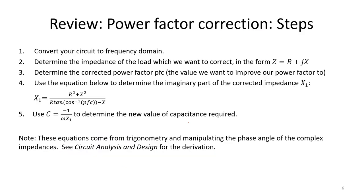We also learned that it's possible to correct the power factor. Ideally, our power factor would be 1 and our current and voltage phasors would be perfectly in phase. In real life, most of the time the best we can do is get a power factor around 0.95. If our circuit has lagging behavior, we can correct our power factor following a specific procedure. These equations come from trigonometry and our equation for the impedance of a capacitor.